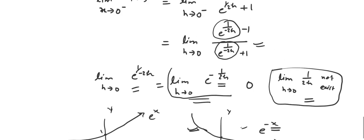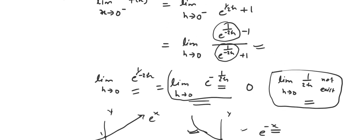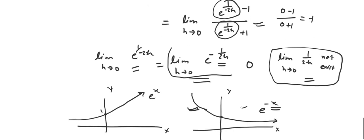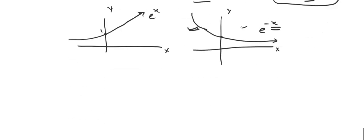Coming back to our case, since e^(-1/2h) → 0 as h → 0⁺, the left-hand limit becomes (0 - 1)/(0 + 1), which equals minus 1. So we obtain left-hand limit = -1.